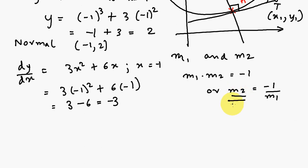The slope of the normal would be given by, if m₂ is the slope of the normal, m₂ is given by minus 1 divided by the slope of the tangent. Let's call slope of the normal m here. It's given by minus 1 divided by the slope of the tangent, which is minus 3, so it's 1 over 3.